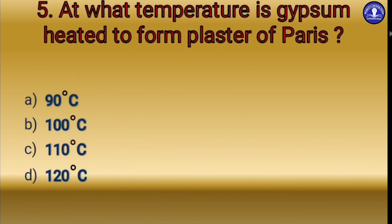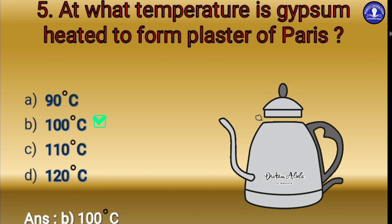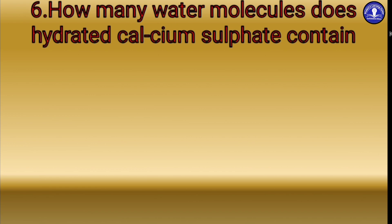The next question: at what temperature is gypsum heated to form plaster of Paris? Option A 90°C, option B 100°C, option C 110°C, option D 120°C. The answer is option B: 100°C. This 100°C is also the boiling point of water.